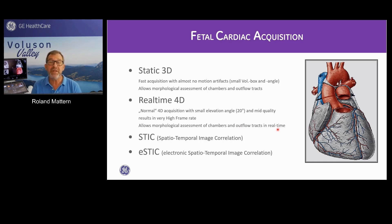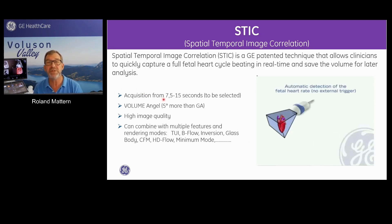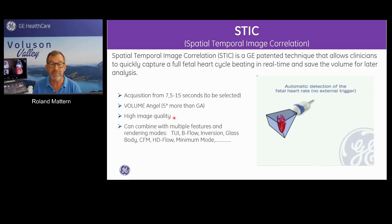The next step is STIC and E-STIC. On STIC, you set up the system with the acquisition time, which can be selected between 7.5 and 15 seconds. You should choose the correct volume angle - 5 degrees more than the gestational age - at high quality. This can be combined with multiple features and rendering modes like TUI, B-Flow, Inversion, Glass Body, and so on.